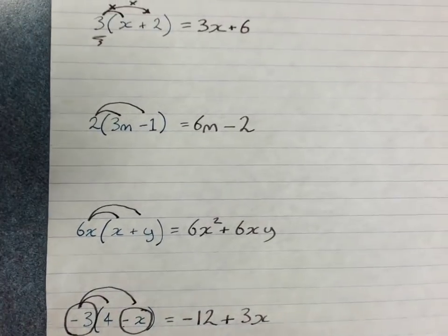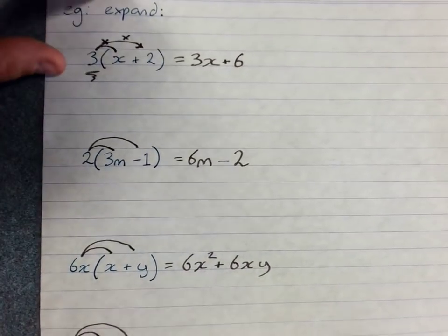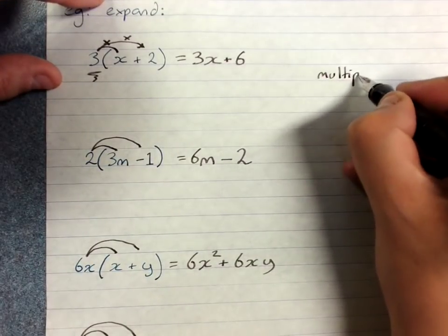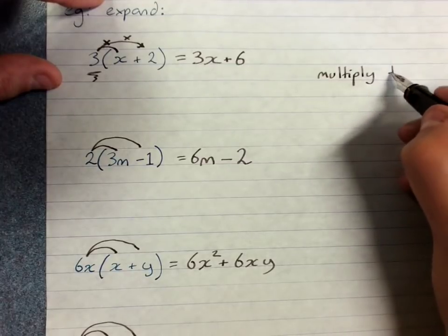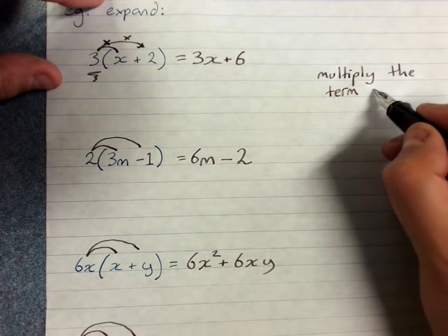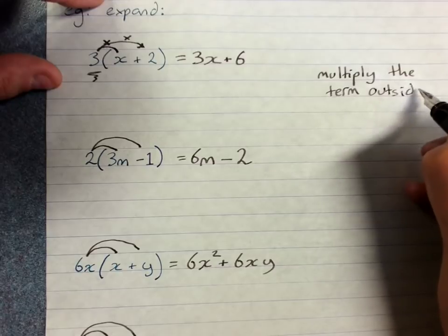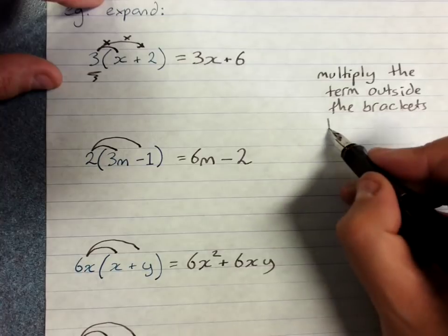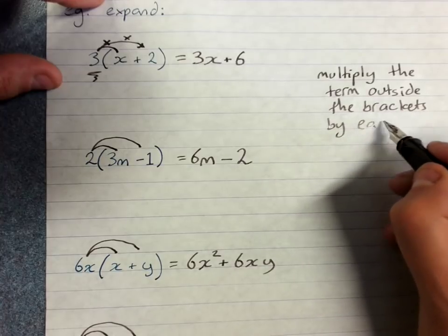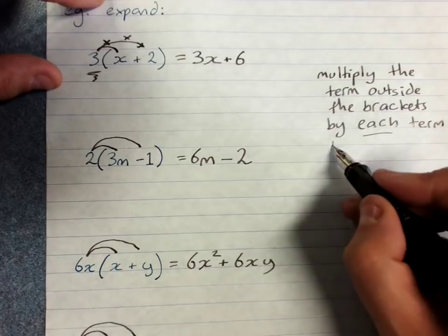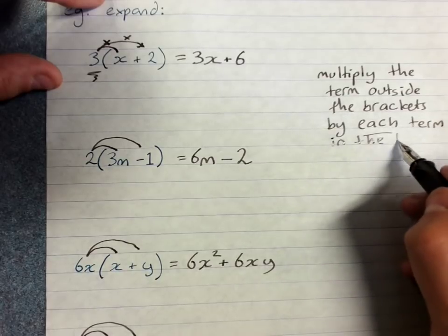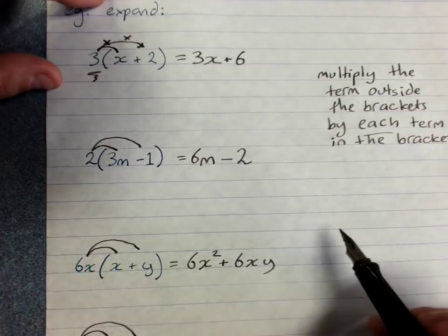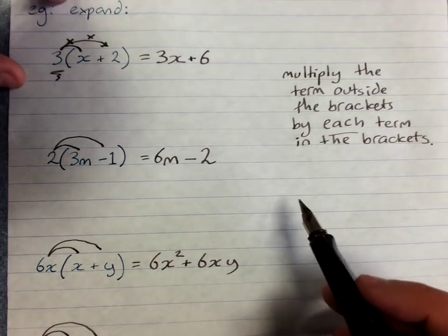So your steps when you're expanding, when you see expand, this is what they want you to do: multiply the term outside the brackets by each term in the brackets, and you have to pay attention to the signs.